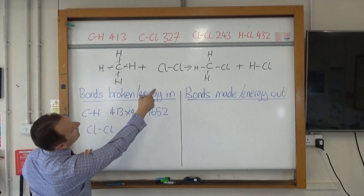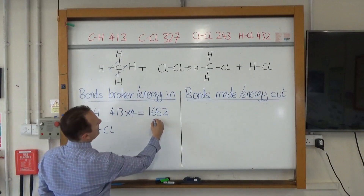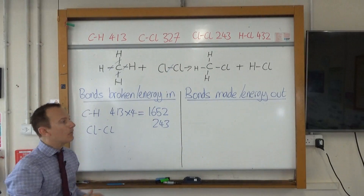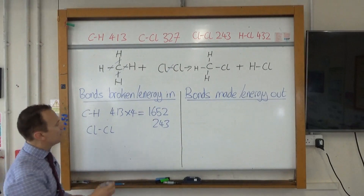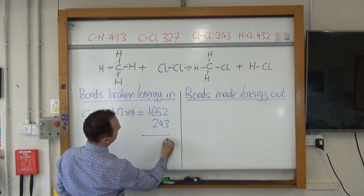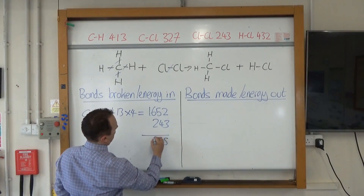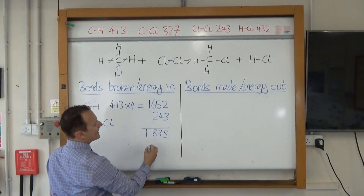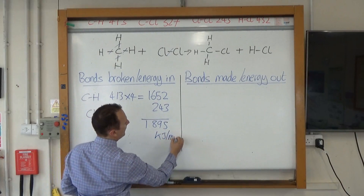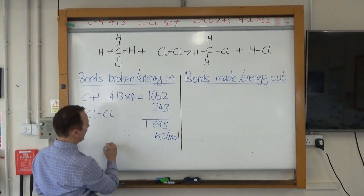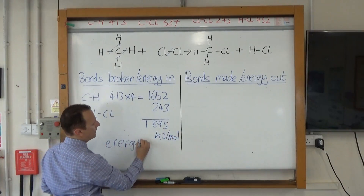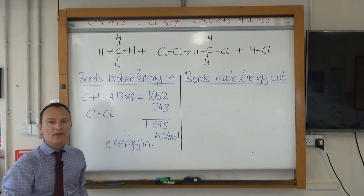The Cl–Cl bond is 243, so once again we'll cross it off so we know we've dealt with that bond. Then we add up these numbers and we get 1,895 kilojoules per mole, and that is the energy in to break those bonds. That is the first stage and will get you the first mark on your exam question.